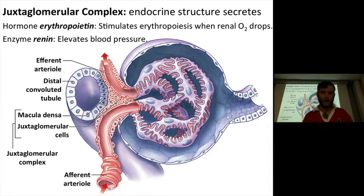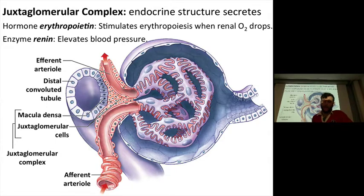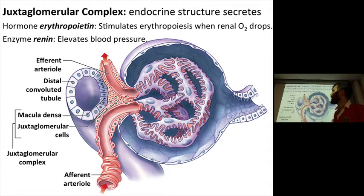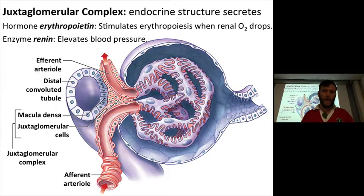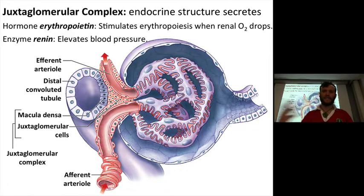One of the principal actors in initiating these cascades is what we call the juxtaglomerular complex. These are an aggregate of a couple different cell types taken together — an endocrine structure that's going to secrete a number of hormones that have various effects. One of those hormones is erythropoietin. It simply stimulates erythropoiesis when renal oxygen levels drop, so this is sensitive to oxygen delivery at the capillary bed of the glomerulus.